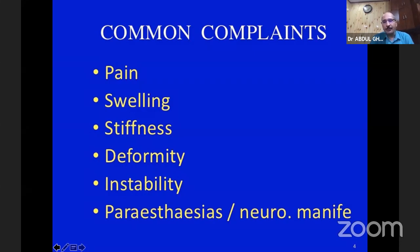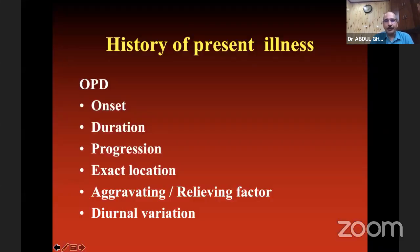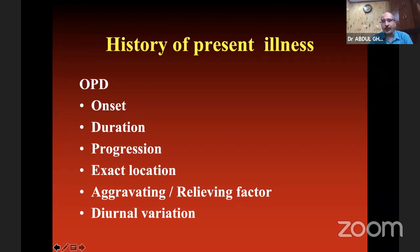The patient may complain of inability to use the hand for proper function. You follow the same system: history of chief complaint, history of present illness. The most common complaint is pain. You have to see what is onset, duration, and progression — best to remember the mnemonic OPD. Then the exact location of pain, what are the aggravating and relieving factors, and particularly if there is night pain, that means things are not really good.